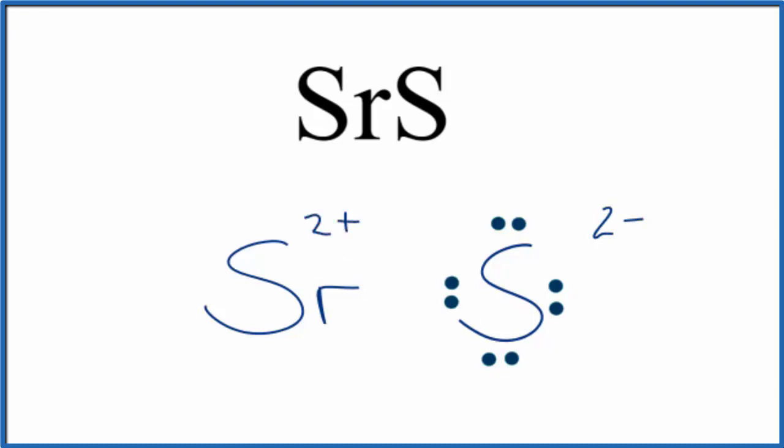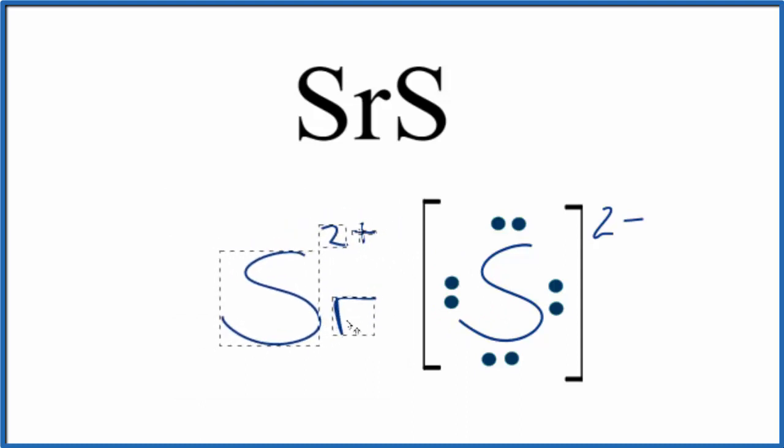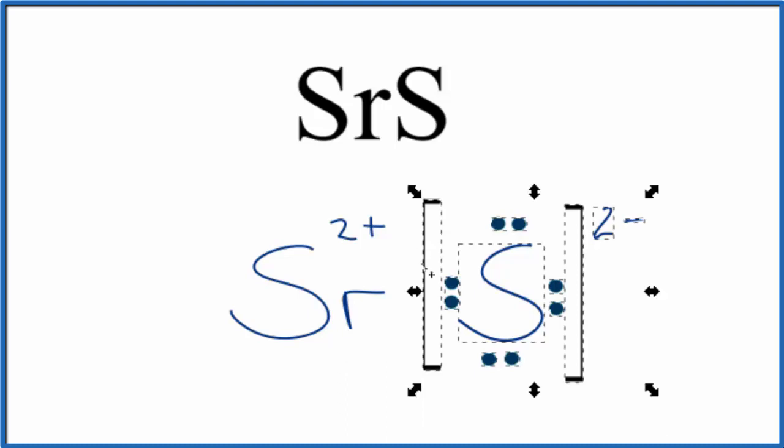So let's put brackets around the sulfur there, and that'll show that the electrons were transferred from the strontium to the sulfur. These electrons right here, they're not shared. They belong to the sulfur now. We have this two plus and the two minus, those opposite charges, they're attracted. That gives us the ionic bond for strontium sulfide.